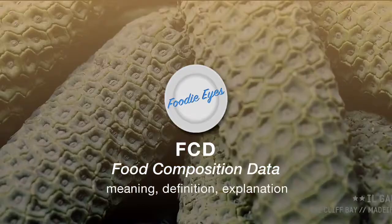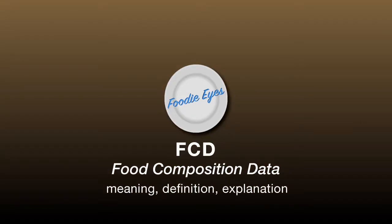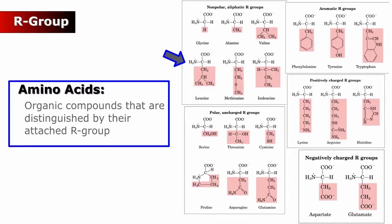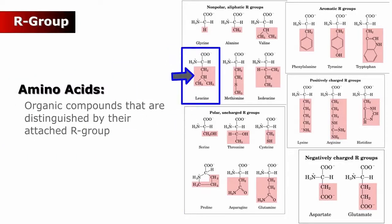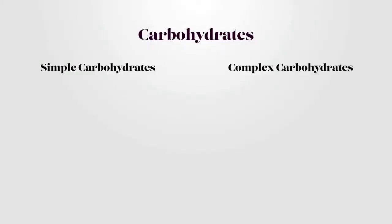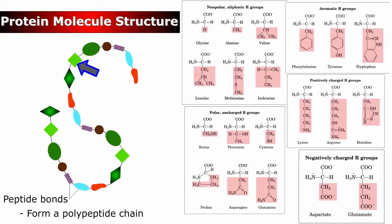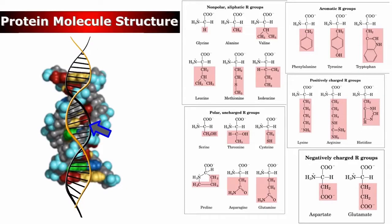Food composition data (FCD) are detailed sets of information on the nutritionally important components of foods and provide values for energy and nutrients including protein, carbohydrates, fat, vitamins and minerals, and for other important food components such as fiber.